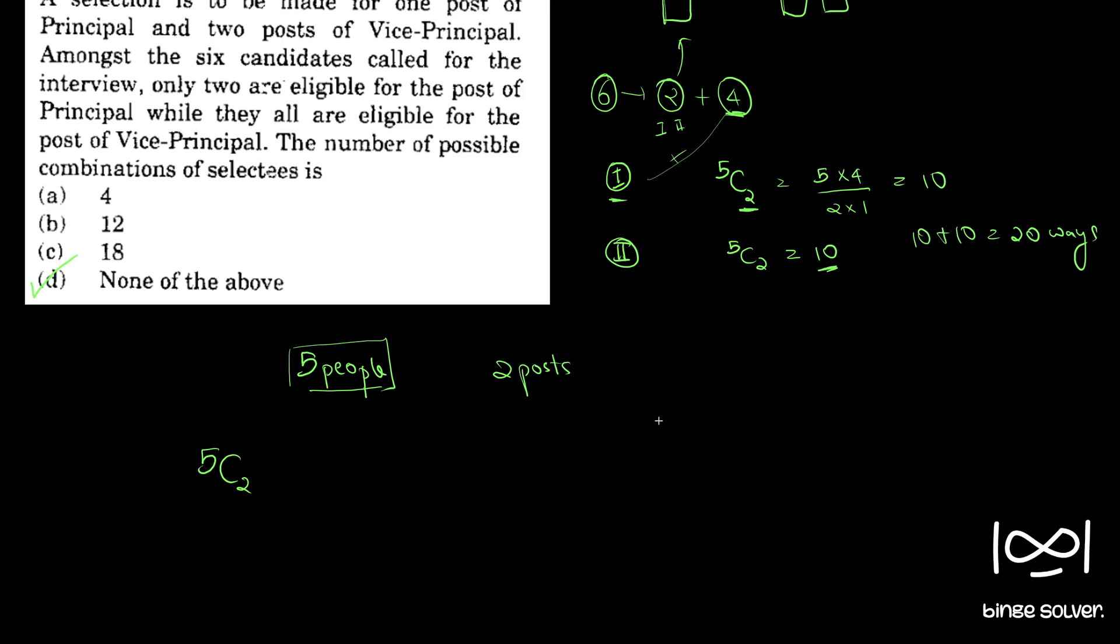An explanation is, say there are 2 posts and there are 5 people. If we want to select 1 person to this post among the 5 people, we have 5 choices to make. So 1 person is selected, that is done.